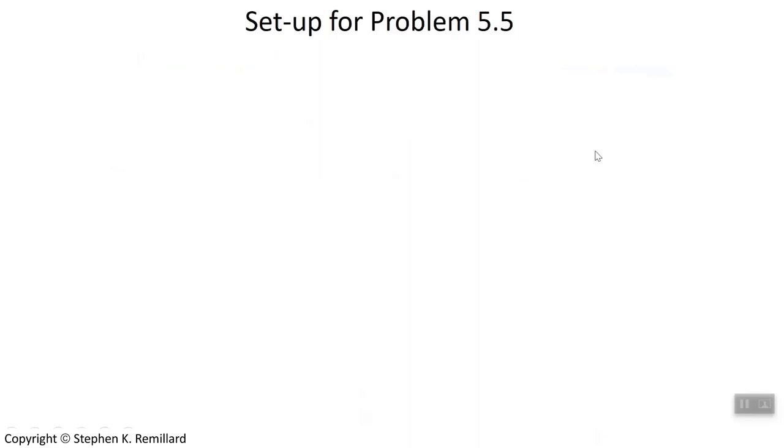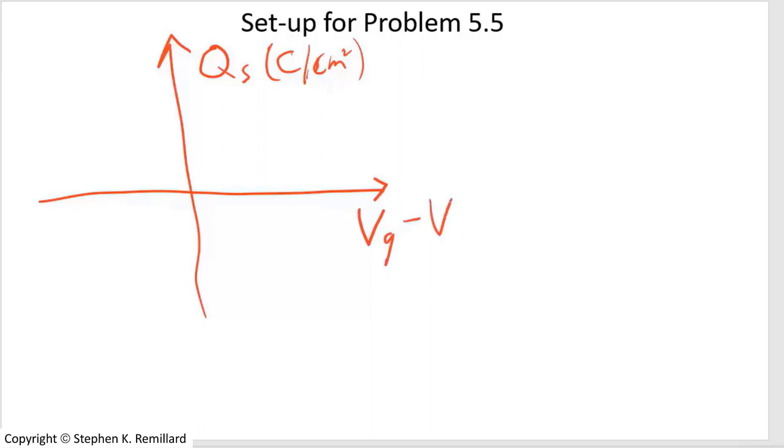So I want to set you up for problem five. I'm going to sketch out the graph that's included in that problem statement. And it's a graph of charge on the surface in coulombs per square centimeter versus the voltage of the gate minus the voltage of the flatband. So there's an offset.